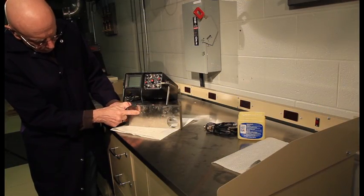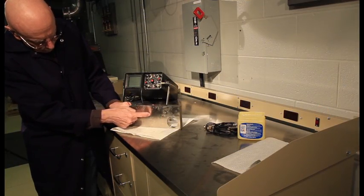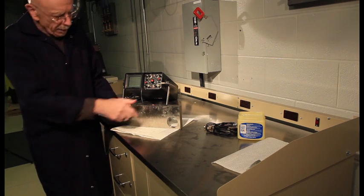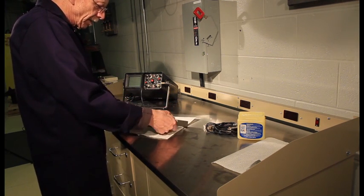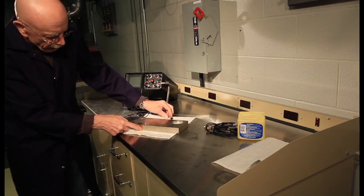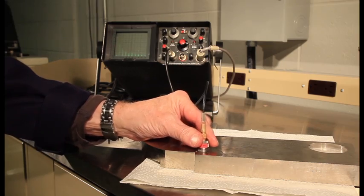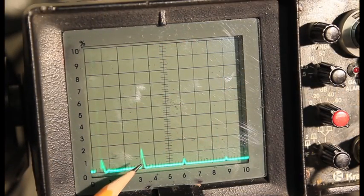Prior to testing a weld or other components such as a casting, the equipment must be calibrated on a block which is of the same material and contains known dimensions and hole sizes. Here, the technician is calibrating the horizontal sweep on the CRT time base as a multiple of 25mm, the thickness of the block.